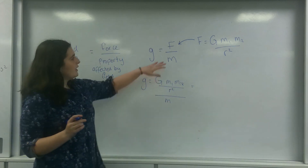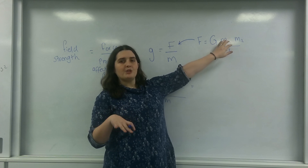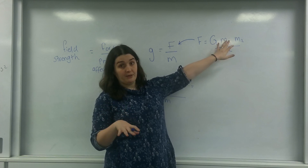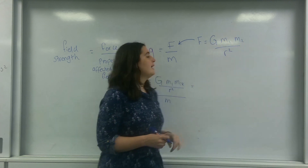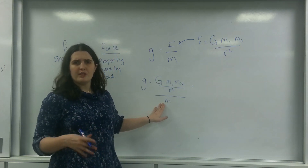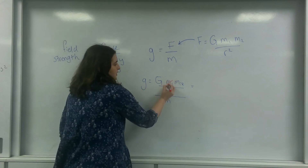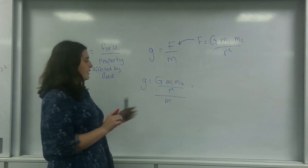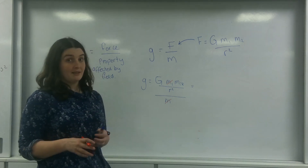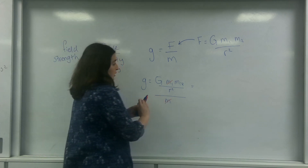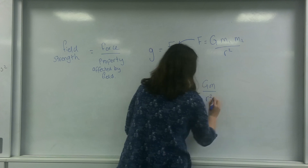Since when we're looking at gravitational force, one of these M's is the object that creates the field and one of these is the object that is in the field. And this M here is the object that's in the field, so one of the M's cancels — the object that's in the field, not the object that's making the field — which leaves us with the formula g = GM over R squared.